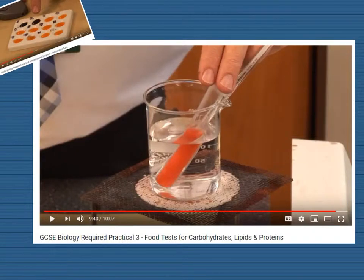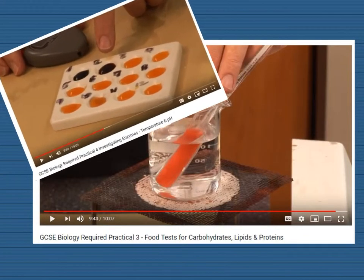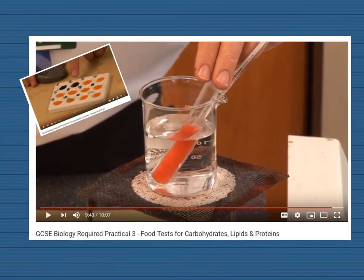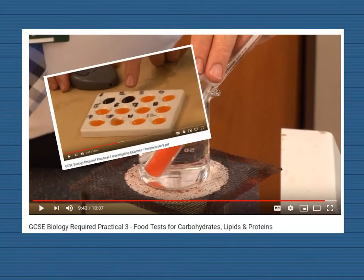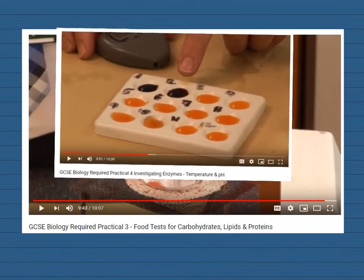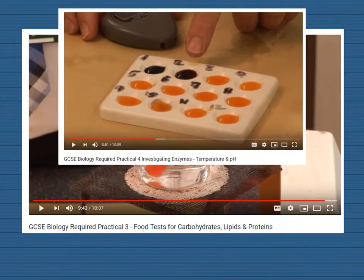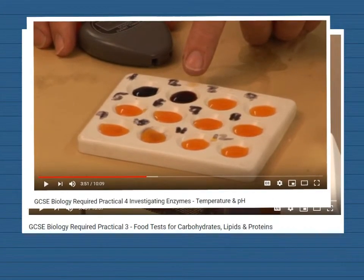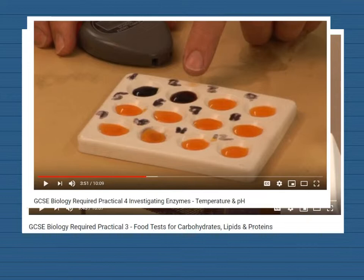It's a good idea to remind yourself of the required practicals. There are two required practicals in the organisation section, both available on Dr. Biology. You've got required practical three, which is the food tests with carbohydrates, lipids, and proteins. The second one investigates enzymes — I investigated temperature specifically, but in the required practical it mentions pH, and exactly the same principles apply. They'll be very useful for your revision.